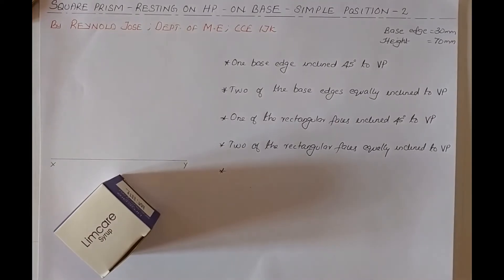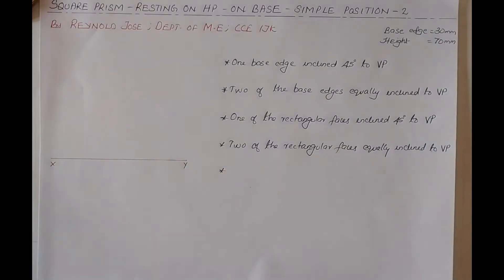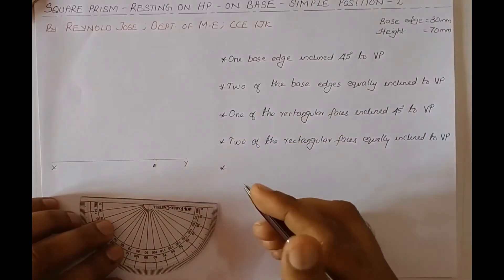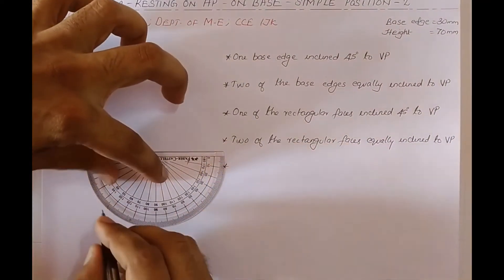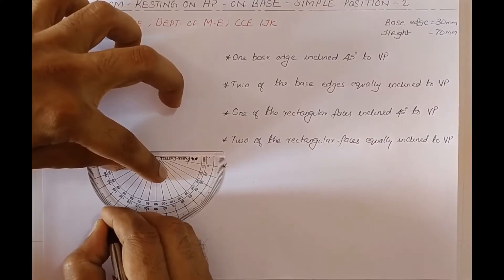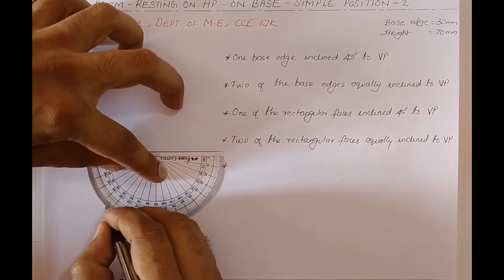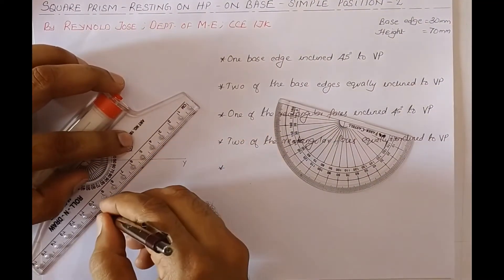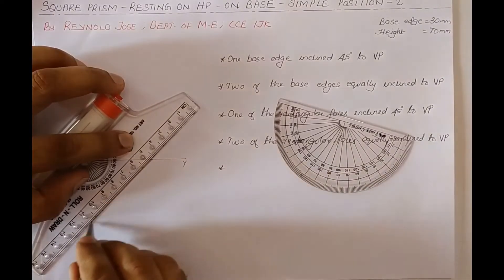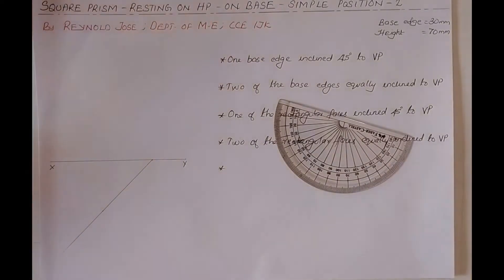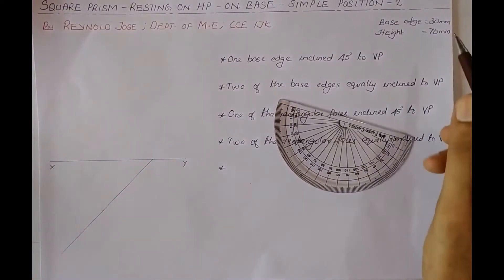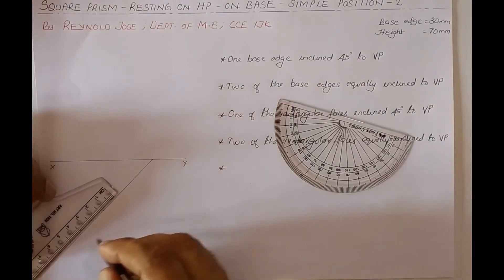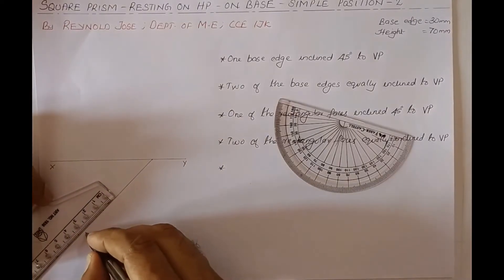We draw a 45-degree thin line. Assume that the base edge length is 30 mm and height is 70 mm. We fit a 30 mm length on this 45-degree inclined line to represent the base edge inclined to VP.